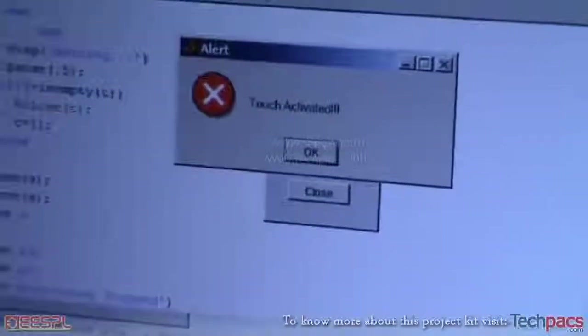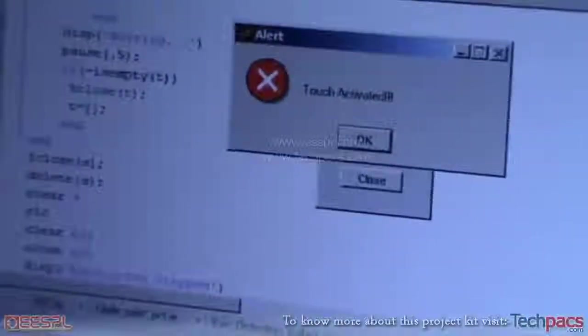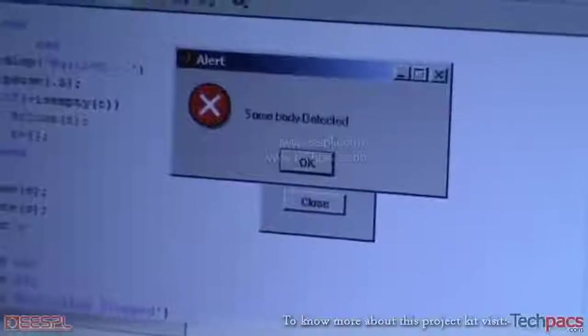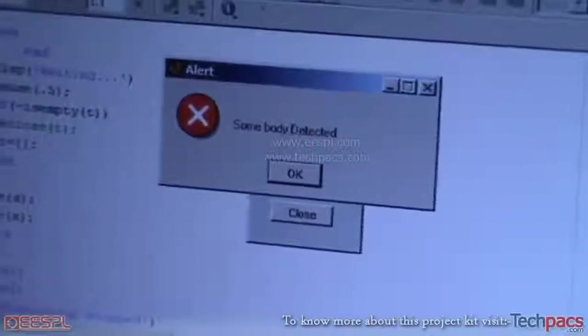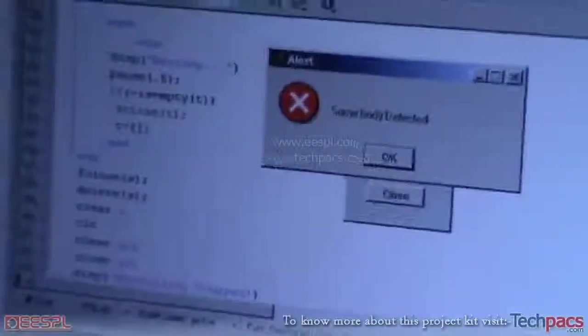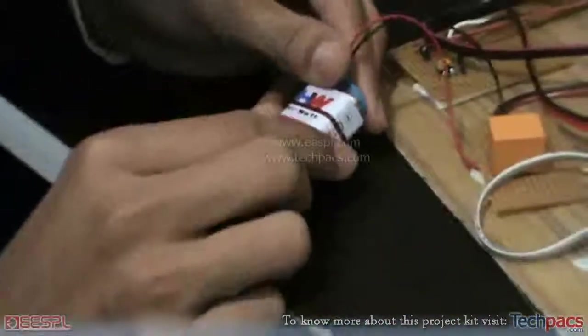Now again we'll be activating the reflector sensor. There it goes. Now it says that somebody has been detected. And if in case the power fails at a BTS, on removing the battery, alert will be there. LCD displaying power failure.